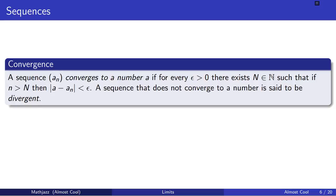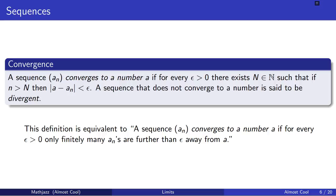Another property that sequences may or may not have is convergence. A sequence a_n converges to a number a if for every epsilon greater than 0 there exists a number capital N such that if little n is greater than capital N, then the absolute value of a minus a_n is less than epsilon. A sequence that does not converge is said to be divergent. Equivalently, a sequence a_n converges to a if for every epsilon greater than 0 there are only finitely many a_n's that are further away from a than distance epsilon.